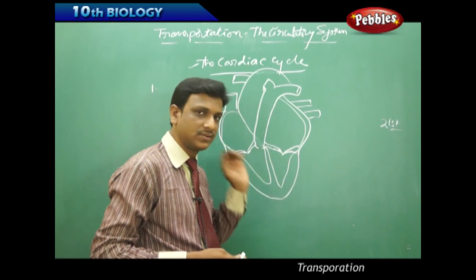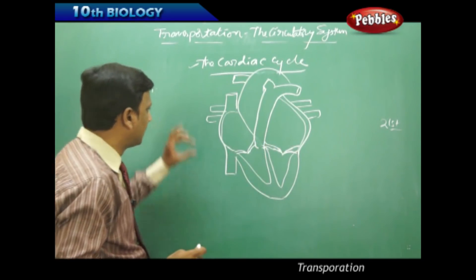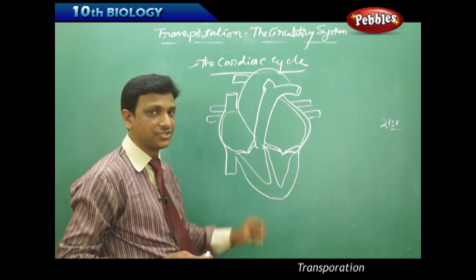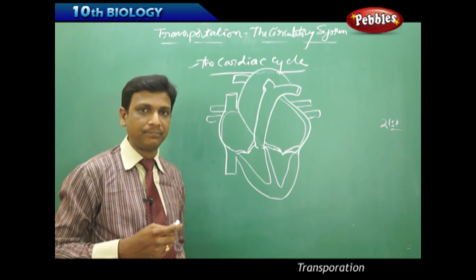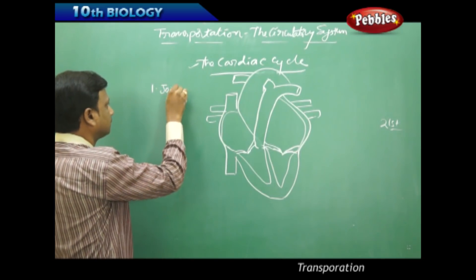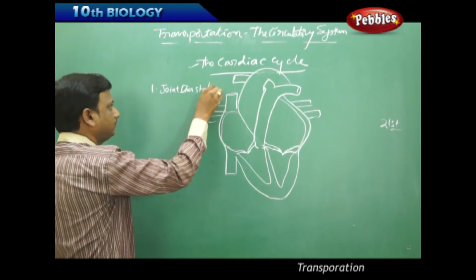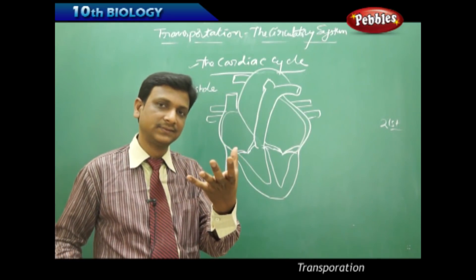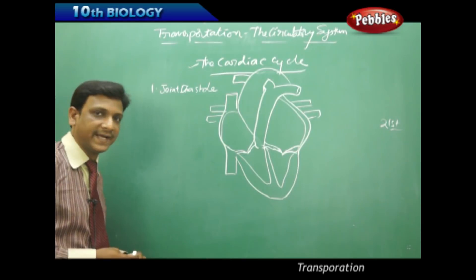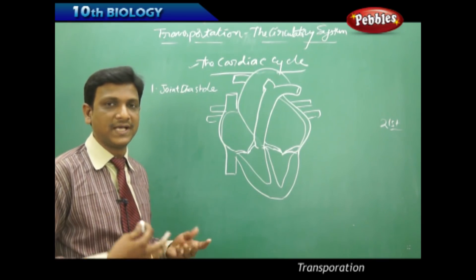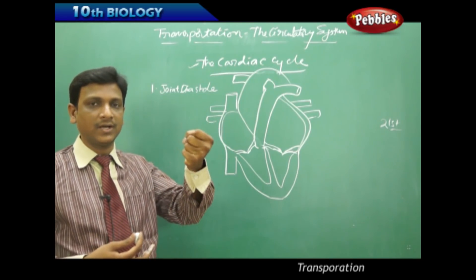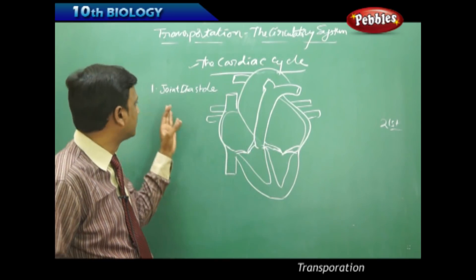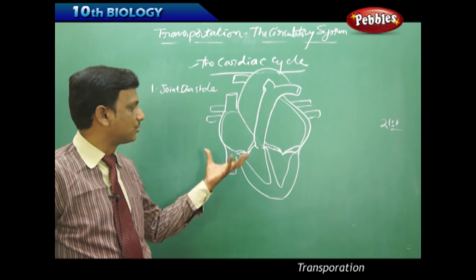The heart has four chambers: two atria and two ventricles, with different blood vessels — arteries and veins — connected to the atria and ventricles. The first step is called joint diastole. Diastole means relaxation of the chambers of the heart. Although naturally all four chambers are not simultaneously relaxed, we conceptually imagine all four chambers relaxed, which is called joint diastole.